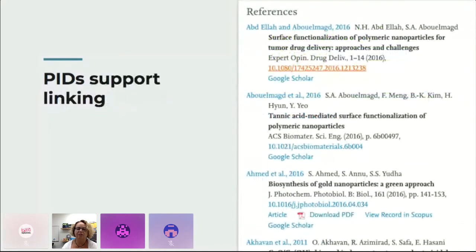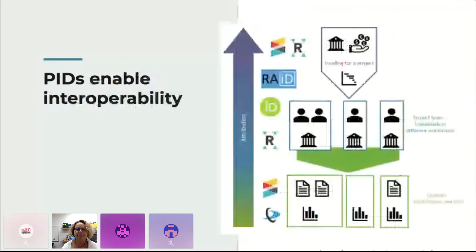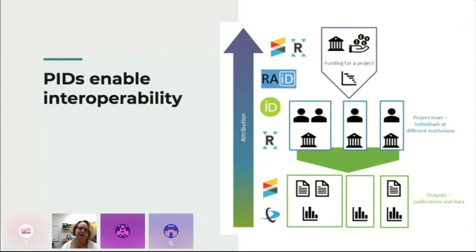PIDs are also good for linking. In an ORCID record you actually link the person with their works — not just articles but also the data they produce, the grants they're connected to, and all kinds of things linked through their ORCID. That ensures this person is associated with these particular works or was involved in this particular research. PIDs also enable interoperability — machine-to-machine exchange of information. Machines can go in, read the metadata associated with a PID, and pull that information in various ways. In this record you can see icons for Crossref, ROR, RAiD, ORCID, and DataCite — all enabling interoperability.